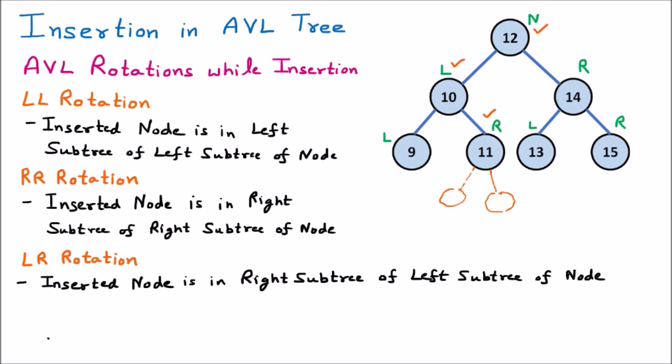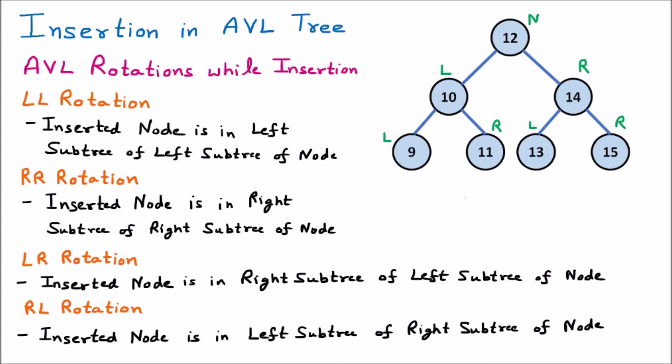Next is RL rotation, where left comes after right. The inserted node is in the left subtree of the right subtree of the node. If we have a node with its right subtree, and then the left subtree of that right subtree — inserting a node here or here means it is inserted at the left of the right subtree. If the tree becomes unbalanced, we apply RL rotation.